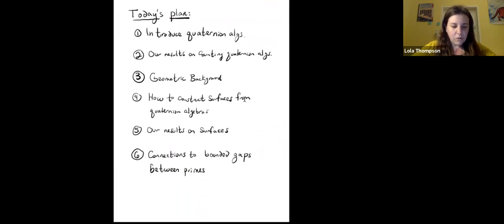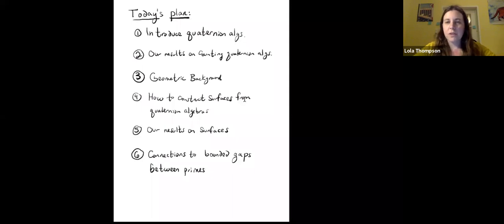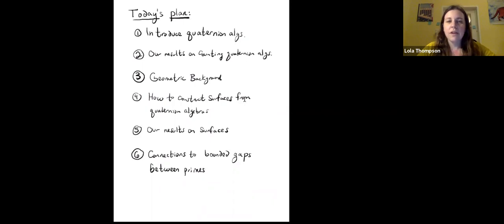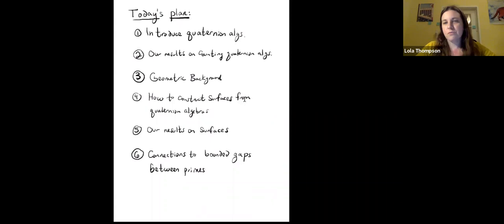Just to give you a sense of what I'm going to do today: I'll start by introducing quaternion algebras and defining some basic things about these objects. Then I'll give a sample of our results on counting quaternion algebras. After that, I'll give some geometric background, discuss how we construct surfaces from quaternion algebras, and then tell you what we've proven about surfaces, sketch some proofs, and — if there's enough time — discuss some connections to bounded gaps between primes.